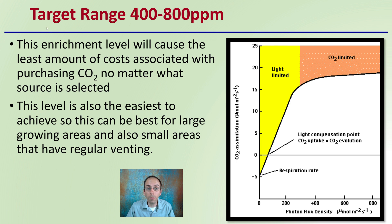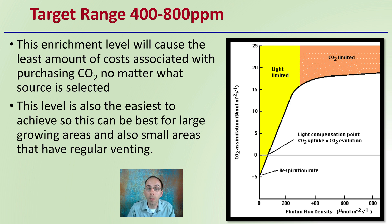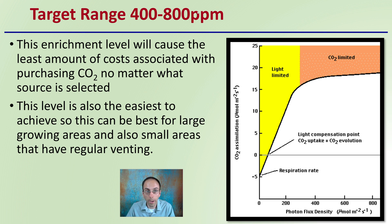The target range starting at 400 parts per million will cause the least amount of costs associated with purchasing carbon dioxide, no matter what source you choose. This level is also the easiest to achieve. This can be the best for large grow areas and also small areas that have regular venting. You're getting above those atmospheric conditions and will potentially see an increase in yield, assuming no other limiting factors.